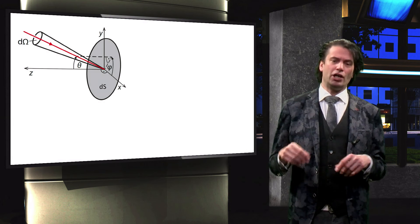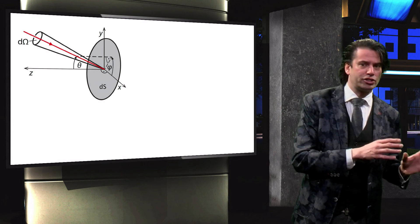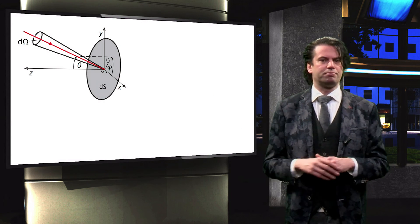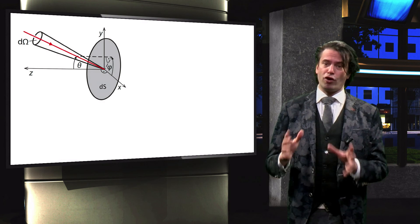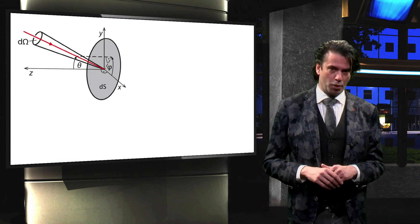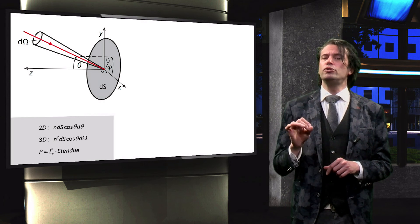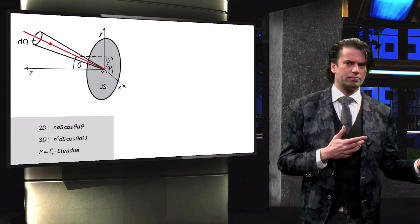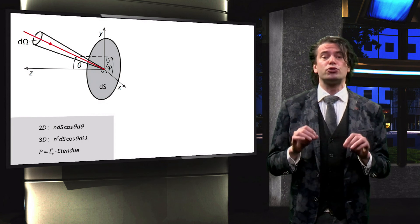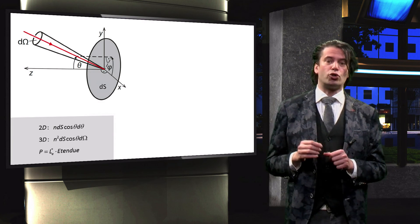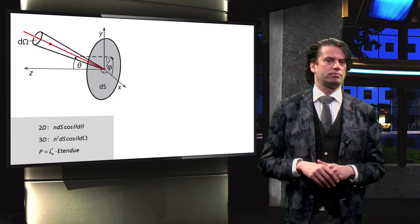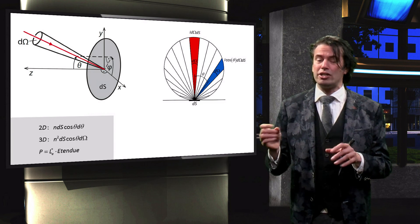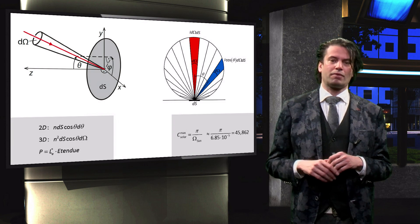Now a short recap. We defined the radiance as the radiant flux emitted by a certain source per unit solid angle and per unit projected area. The étendue we defined as the flux-gathering capability of an optical system, relating the geometrical and angular properties of a source to the geometrical properties of a medium. The power incident on a certain area equals the product of the basic radiance of the source and the étendue of the optical system. We also discussed that, in the case of a Lambertian scatterer, the radiance reflected at any angle is proportional to cosine theta. Finally, we determined that sunlight can be concentrated over 45,000 times.